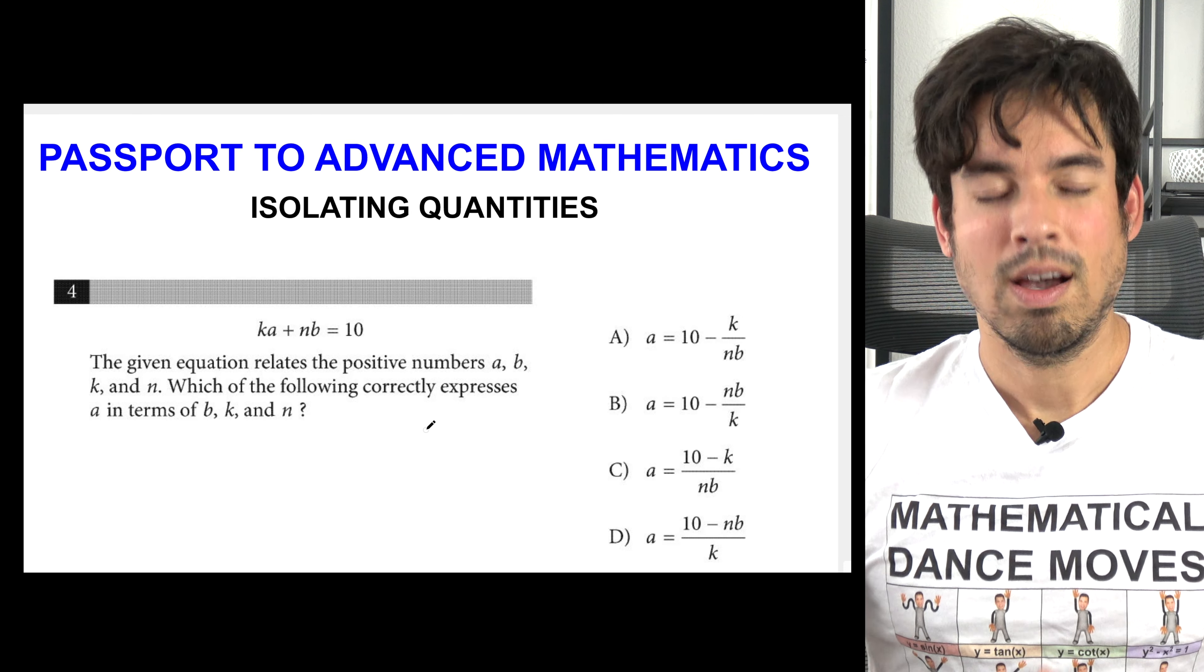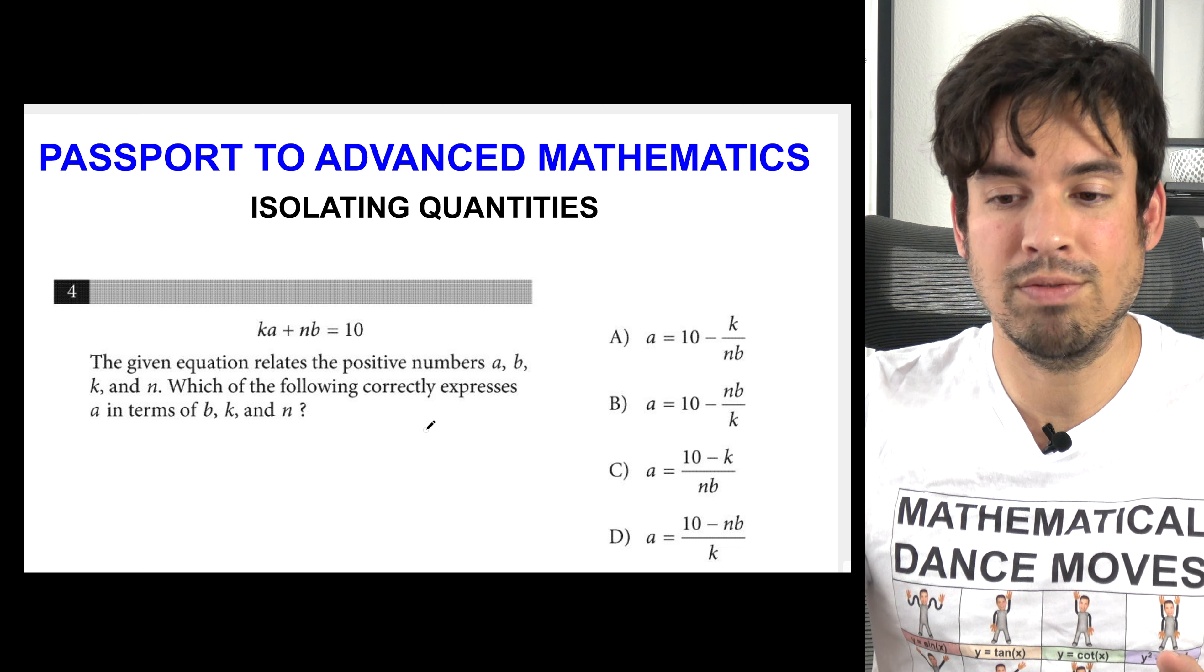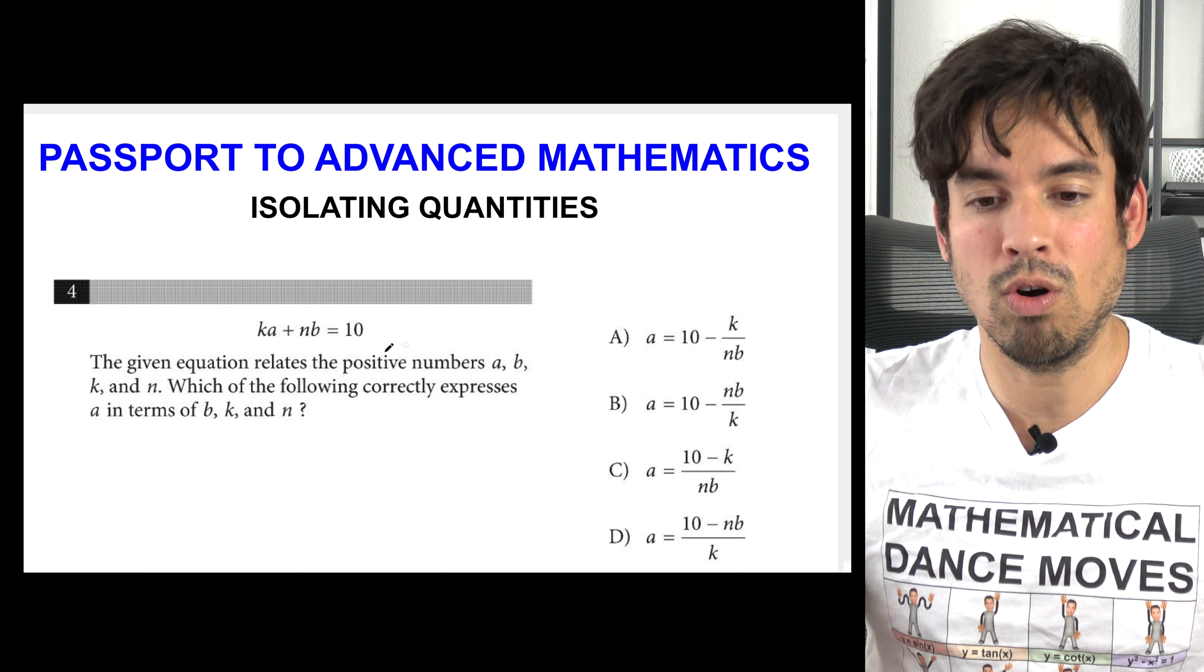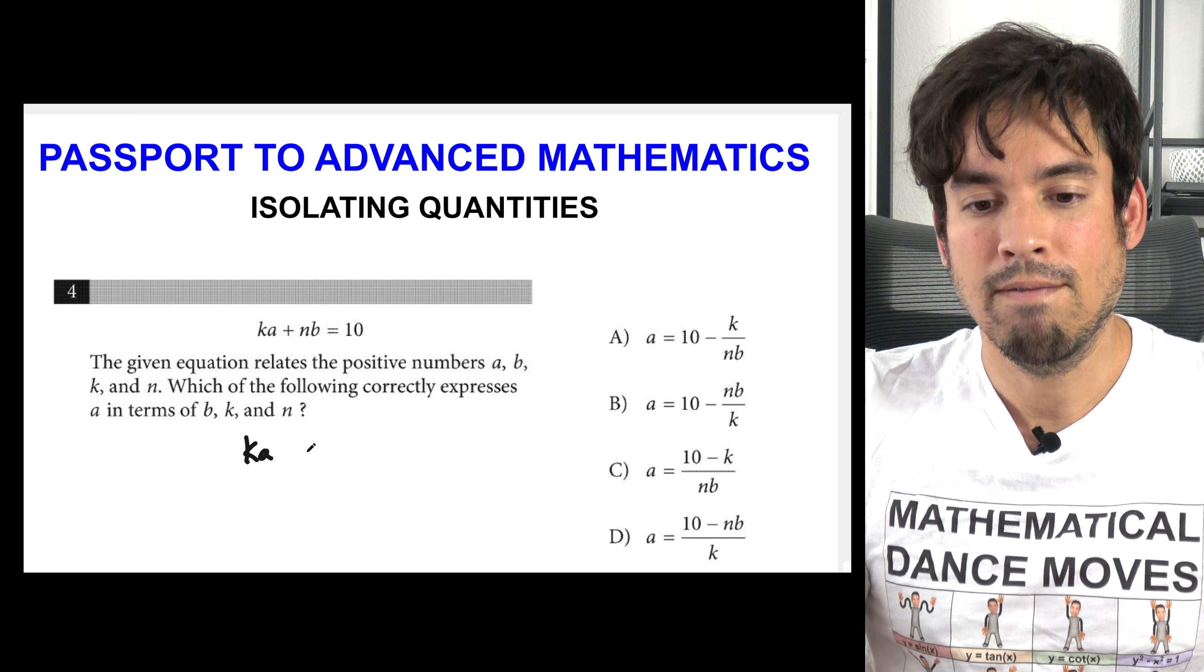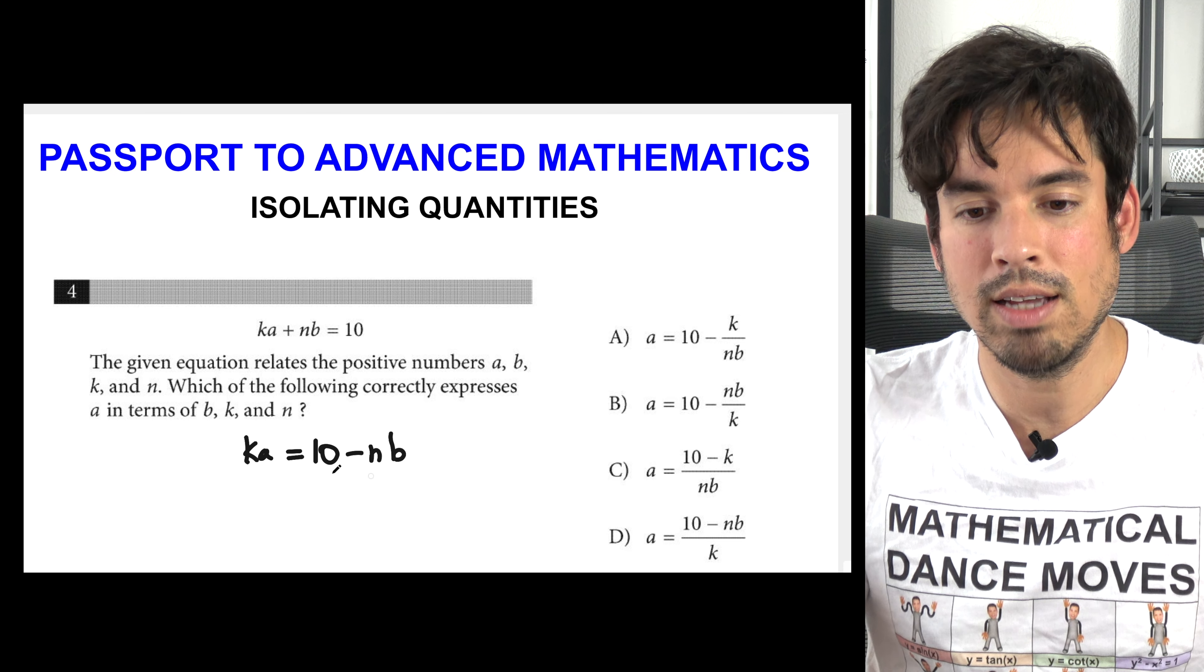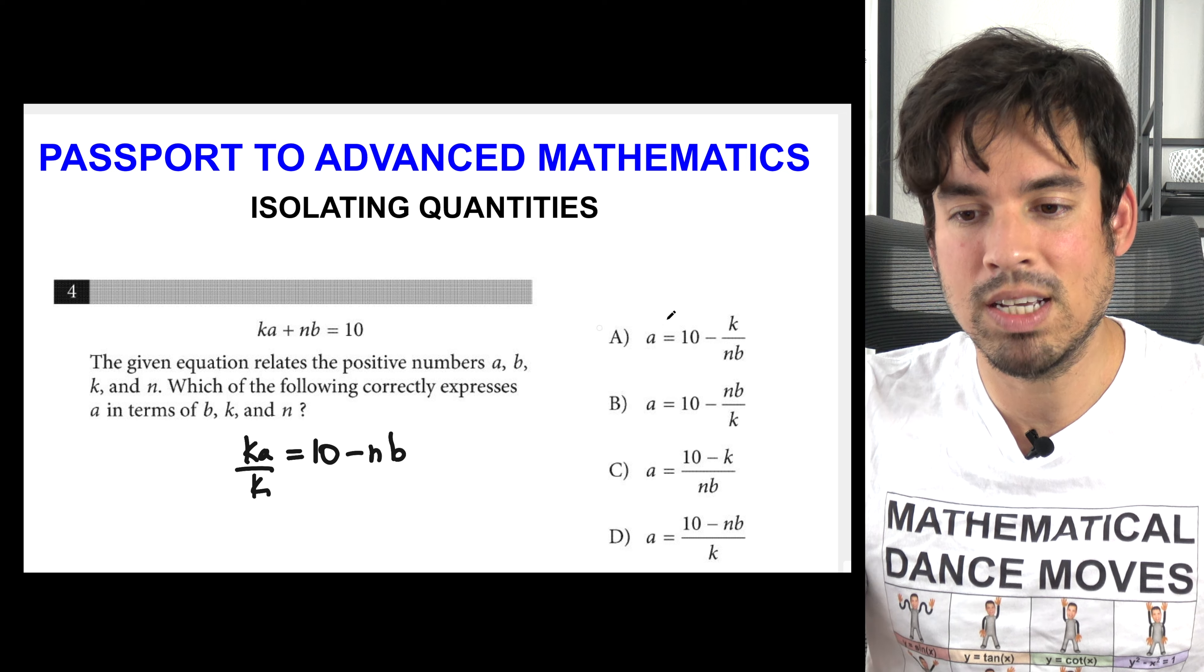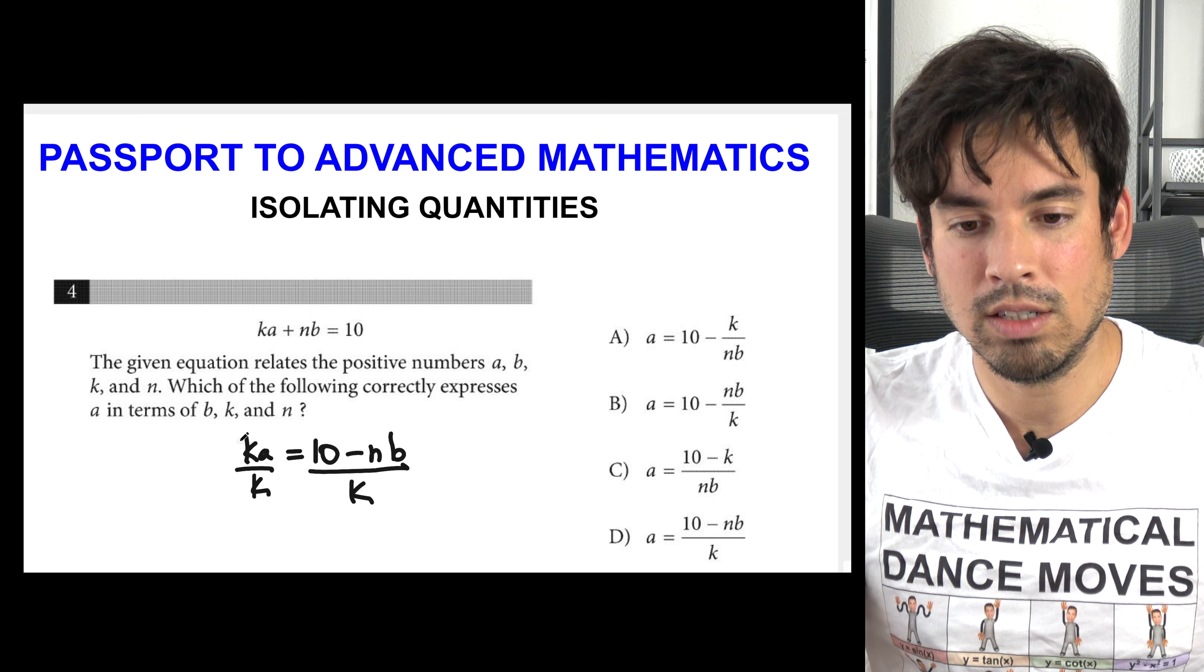Isolating quantities is one of the places where the College Board really is going to try and help you. Because if you glance at the answers and you know you're starting with the formula, you don't even need to read any of this. All you're trying to do is isolate a. So watch this. I say ka equals 10 minus nb. First I'm going to subtract nb from both sides, then I'm going to divide k. And look, I don't even need to read because I know from the answer choices we're trying to isolate a. Cancel that out, a equals 10 minus nb over k. Boom, done.